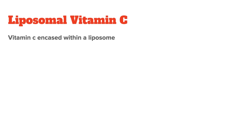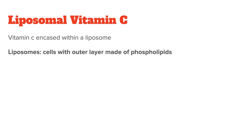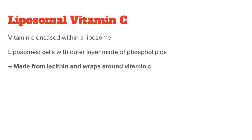On to the last of the three major types of synthetic vitamin C. Liposomal vitamin C. As the name suggests, here the vitamin C is wrapped in a liposome. Liposomes are cells made of an outer layer of fatty acids that are known as phospholipids. Phospholipids are usually made from lecithin, and they wrap around the vitamin C to protect it.